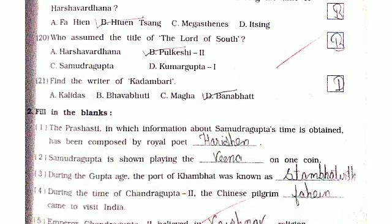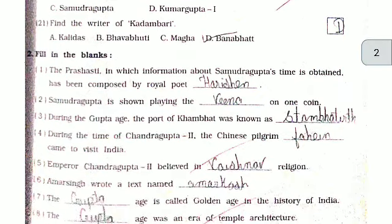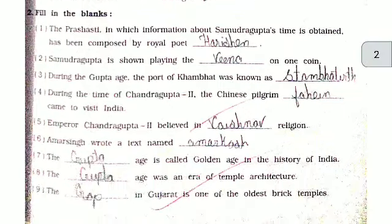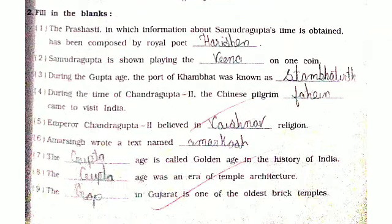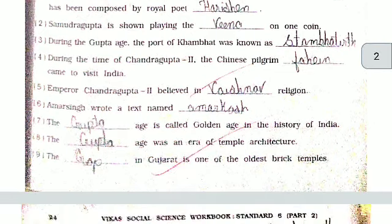Who assumed the title of the Lord of the South? Pulkeshi 2. Find the writer of Kadambari. Banabhatta. Now the fill in the blanks section. The inscription in which information about Samudra Gupta's time is obtained has been composed by royal poet Harisena.